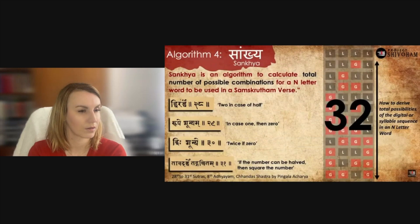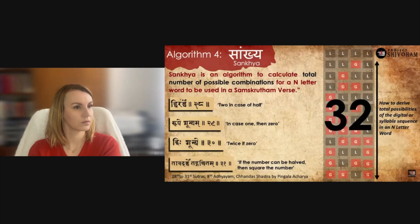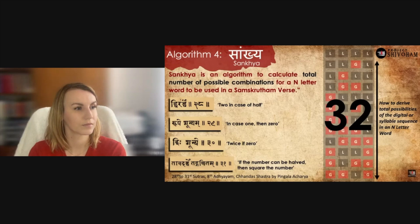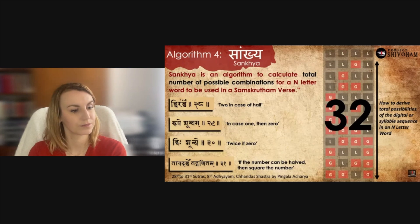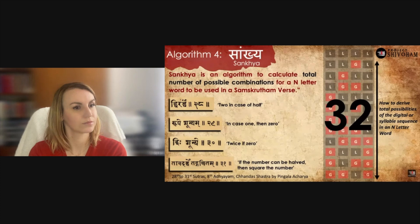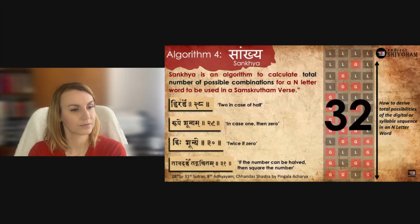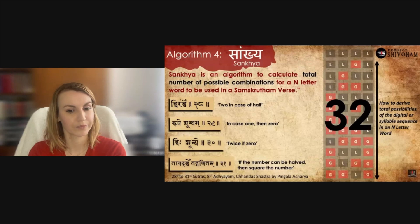Up next is the fourth algorithm, Sankhya — to calculate the total number of possible combinations for an n-lettered word. For a five-lettered word, how many different combinations of guru and laghu are there? Today we say 2⁵ = 32, but here we are talking about ancient algorithms that cracked this problem thousands of years ago. The 28th through 31st sutras of the 8th Adhyayam of Chandash Shastra by Pingalacharya define Sankhya: to calculate the total number of possible combinations for an n-lettered word.